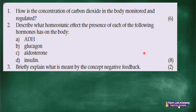You'll remember with homeostasis that it regulates quite a number of things. One of the things regulated is carbon dioxide concentration, as well as oxygen concentration, glucose concentration, temperature, and water and salt concentration. But right now, we are focusing on the carbon dioxide in the body.